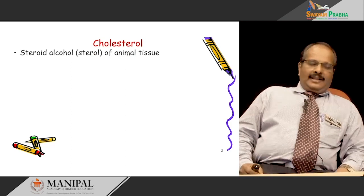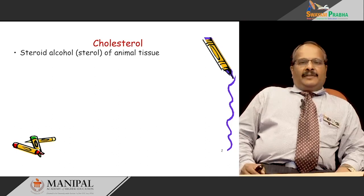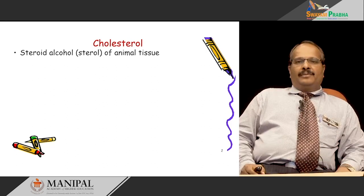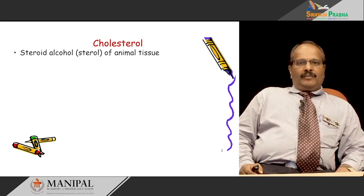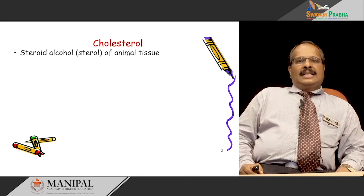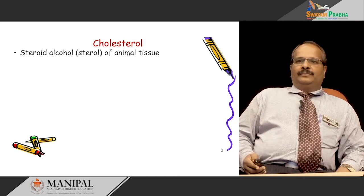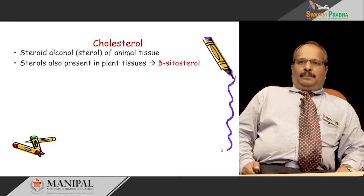Cholesterol is widely distributed in animal tissue. A man weighing 70 kg has approximately around 140 grams of cholesterol distributed mainly in the brain and nervous tissue, skeletal muscle, adipose tissue, liver, skin, spleen and so on. Cholesterol is absent in plants.